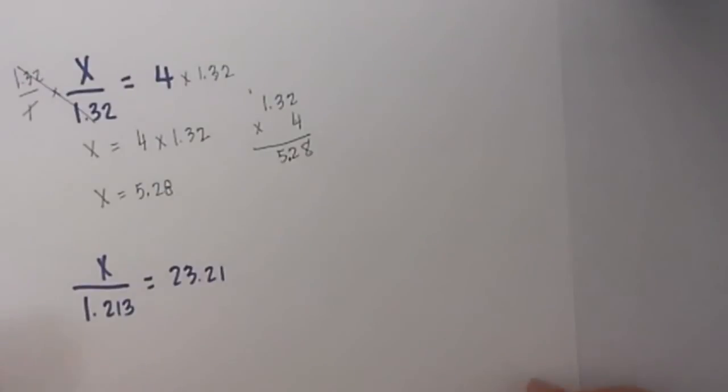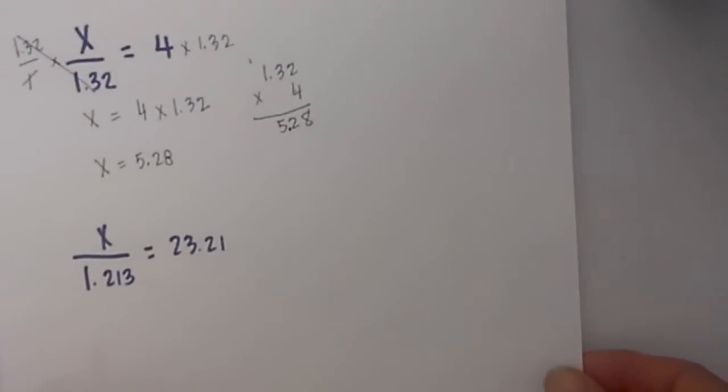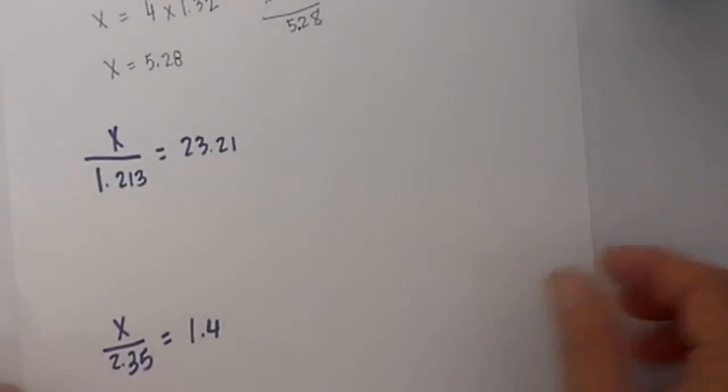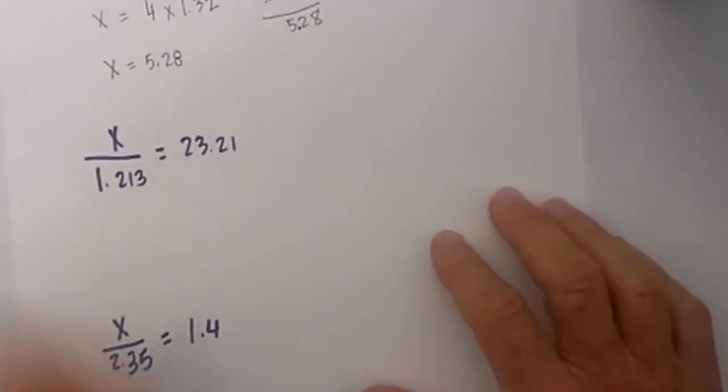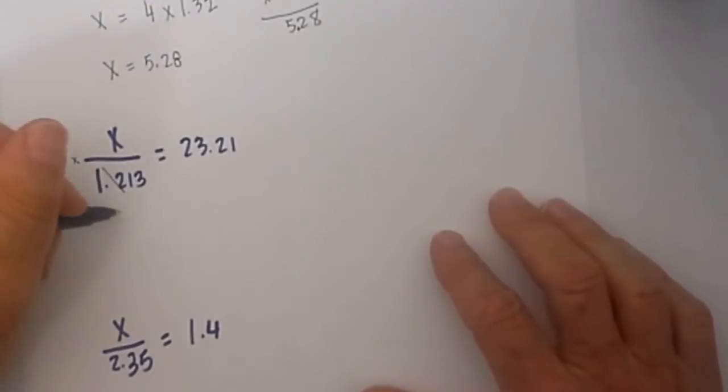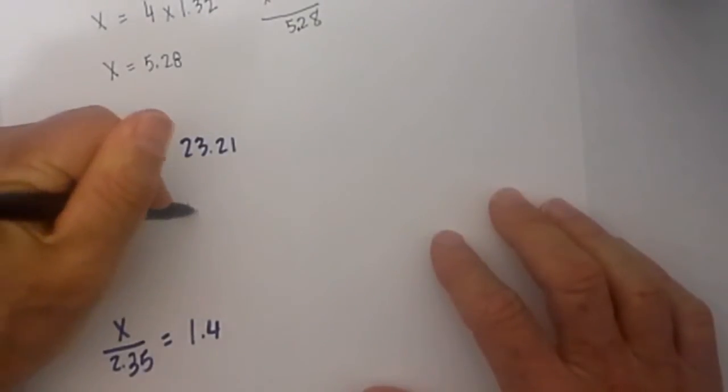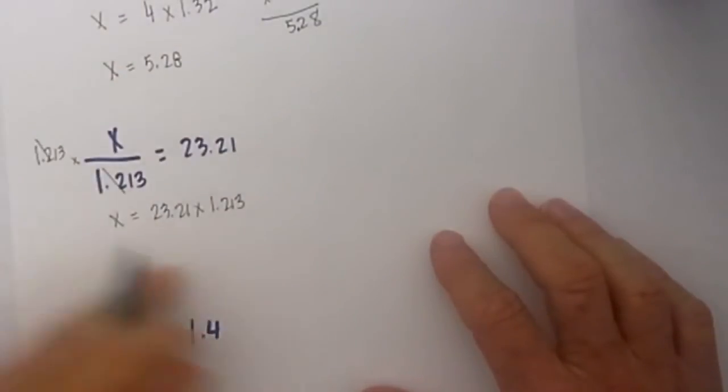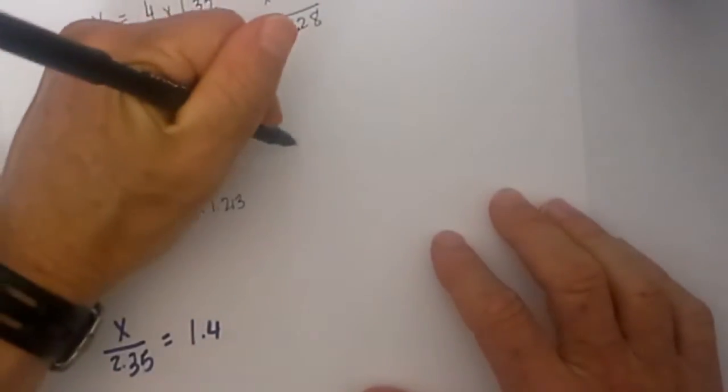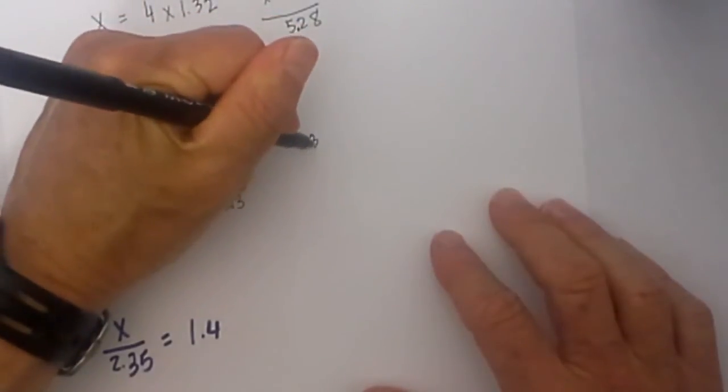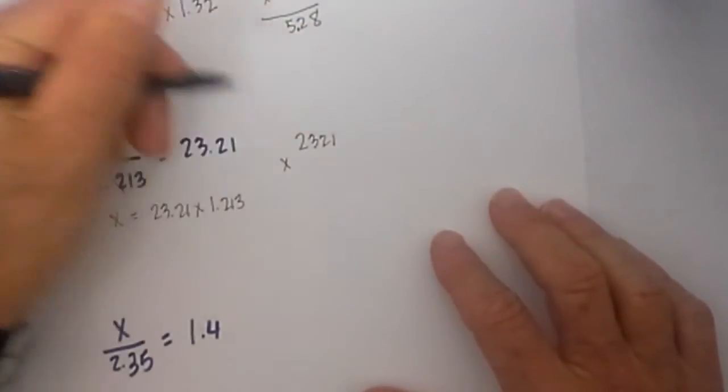Next up let's look at the one in the middle. Now it is a little more involved, but again we have a division problem so we will use multiplication 1.213. So these will cancel and x is equal to 23.21 times 1.213. To multiply them I will put it in a different form so it is easier to see.